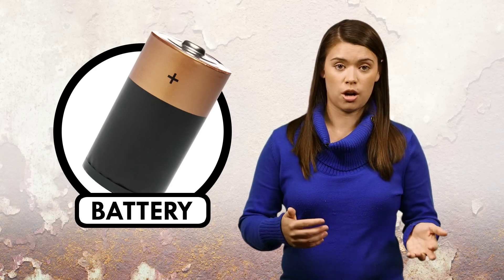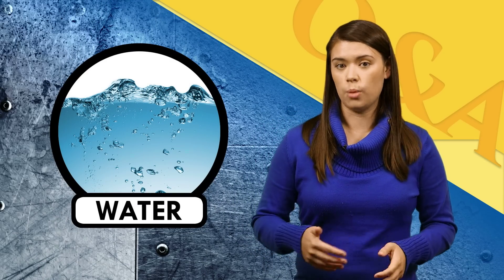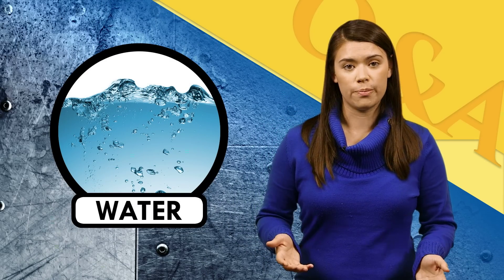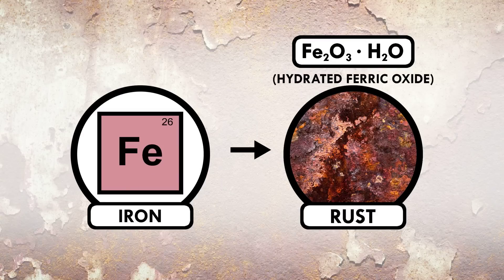Batteries also work using a redox reaction. But back to rust — ever wonder why metal objects rust after being left out in the rain? Well, water is the electrolyte solution that helps rust form. Once these redox reactions occur, iron turns into hydrated ferric oxide, or rust.